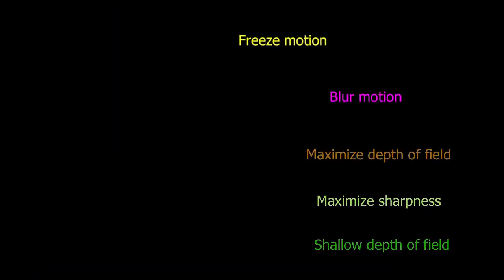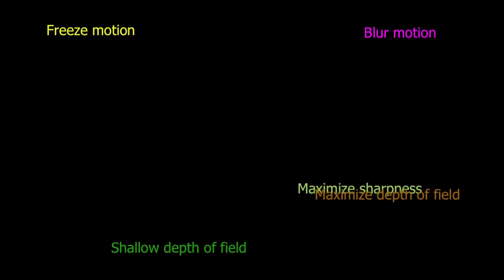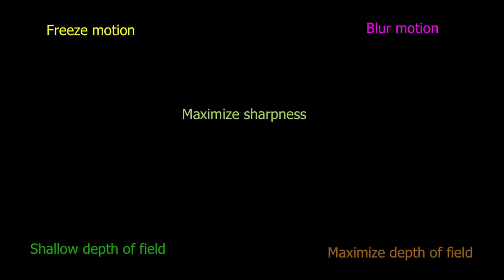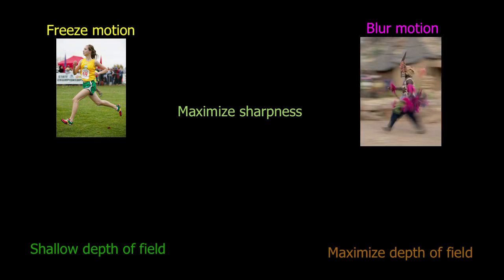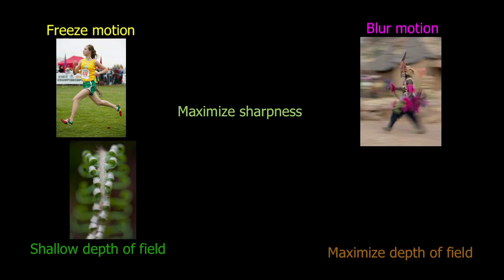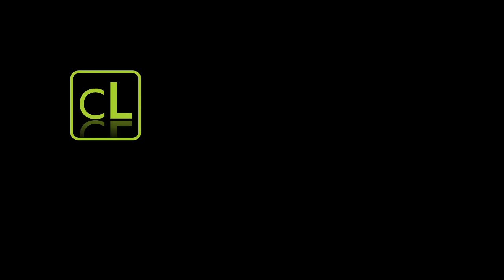What we're going to do now is take these five fundamental tools - they're not really tools, but procedures in photography - and look at different examples of these and how we would go about setting shutter speeds and apertures for them.